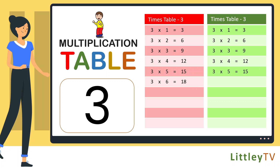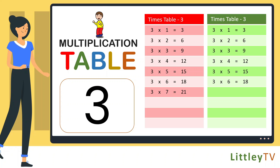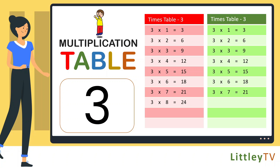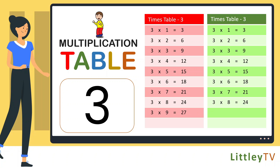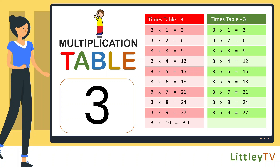3 sixes are 18, 3 sevens are 21, 3 eights are 24, 3 nines are 27, 3 tens are 30.